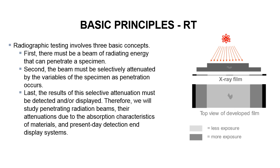Basic Principles of RT. Radiographic testing involves three basic concepts. First, there must be a beam of radiant energy that can penetrate a specimen. Second, the beam must be selectively attenuated by the variables of the specimen as penetration occurs. Last, the results of the selective attenuation must be detected and/or displayed. Therefore, we will study penetrating radiation beams, their attenuations due to the absorption characteristics of materials, and present day detection and display systems.